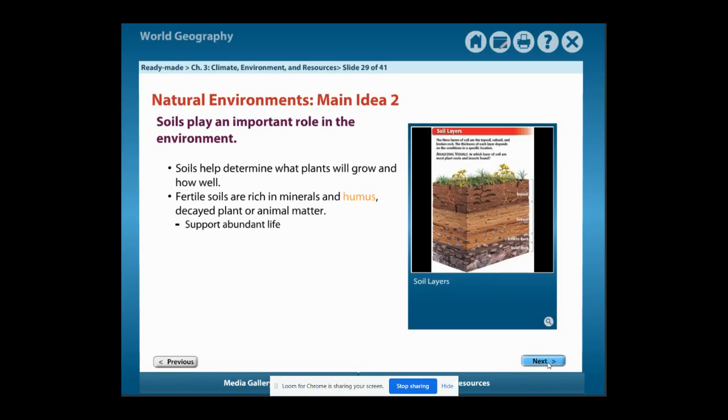Natural Environments Main Idea Number 2: Soils play an important role in the environment. Soils help determine what plants will grow and how well. Fertile soils are rich in minerals and humus, which is decayed plant or animal matter. These soils also support abundant life. Let's take a look at this diagram of soil layers.